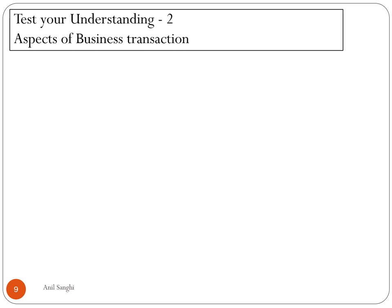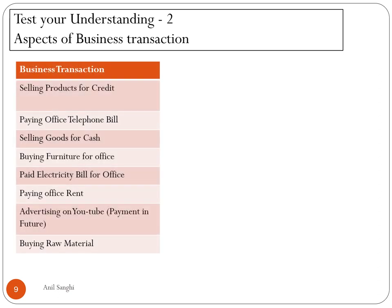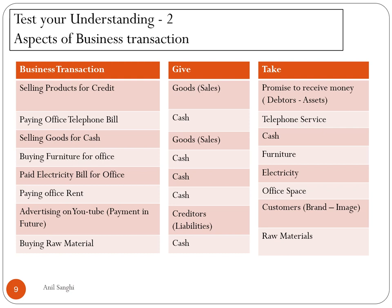Let us look at some business transactions and see what their two aspects are. Selling products for credit: we are giving goods (sales) and we are receiving a promise, creating debtors which are an asset. Paying the office telephone bill: we are paying cash and getting telephone services. Selling goods for cash: we are giving goods and receiving money. Buying furniture for the office: we are paying cash and getting furniture, which is an asset.